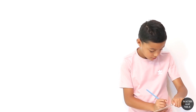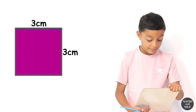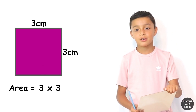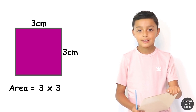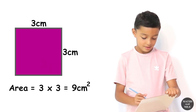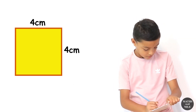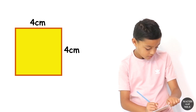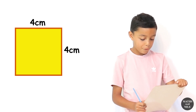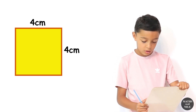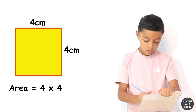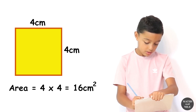What about question number four? It's another square — 3 centimetres by 3 centimetres. So we do three times three, which is nine. So it's nine centimetres squared. What about question five? It's another square — 4 centimetres by 4 centimetres. So we do four times four, which is sixteen. So it's sixteen centimetres squared.